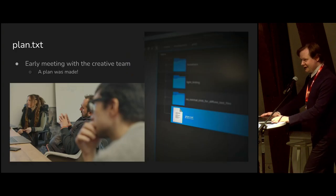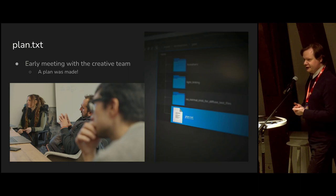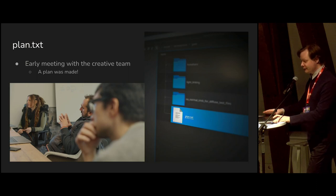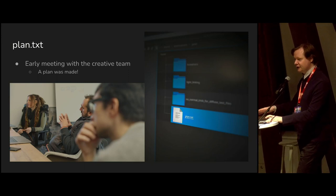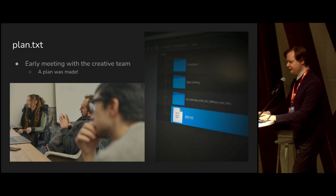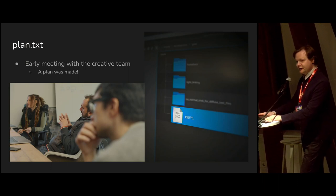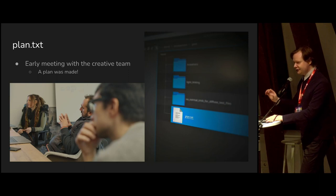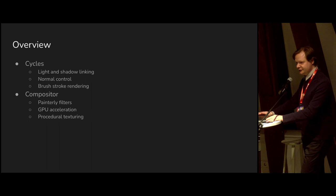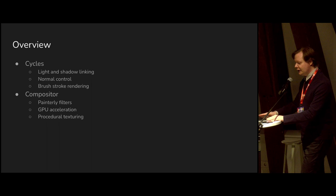For us it was clear we need closer collaboration between developers and our team, which for previous projects wasn't as close as we'd hope. So we sat together with directors, the render team, and all the other Blender developers, and came up with a plan — literally called plan.txt. We highlighted a few topics to work on: for Cycles, lighting and normal controls were the number one priority, and brushstroke rendering came up later.